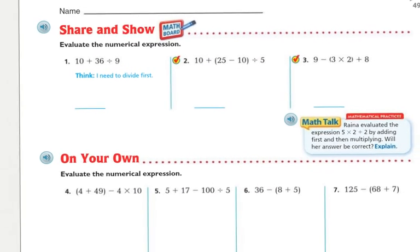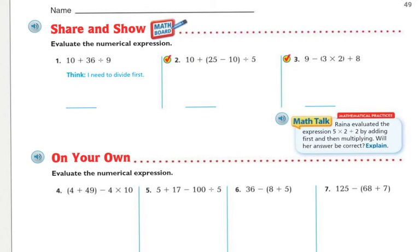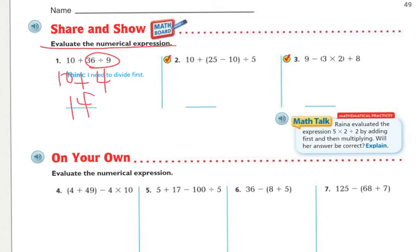Now let's evaluate numerical expressions. First: ten plus thirty-six divided by nine. Following the rules, do division first: thirty-six divided by nine is four. Then add ten: ten plus four equals fourteen.